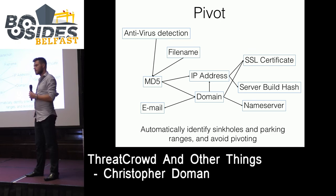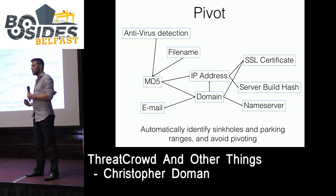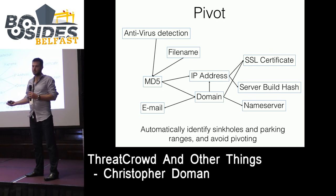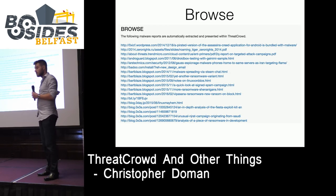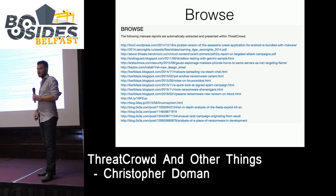There are some smarts on that graph too — if it thinks something's in a sinkhole or a parking range, sometimes attackers will just point the domain at localhost, so you can't see where it's going, and it won't automatically pivot on that. You can browse through a few thousand reports indexed in there with all the indicators — you probably don't want to browse all of those, but that's an option.